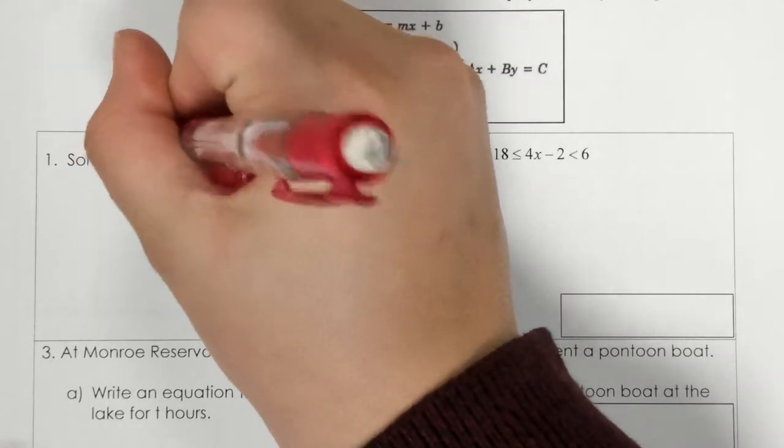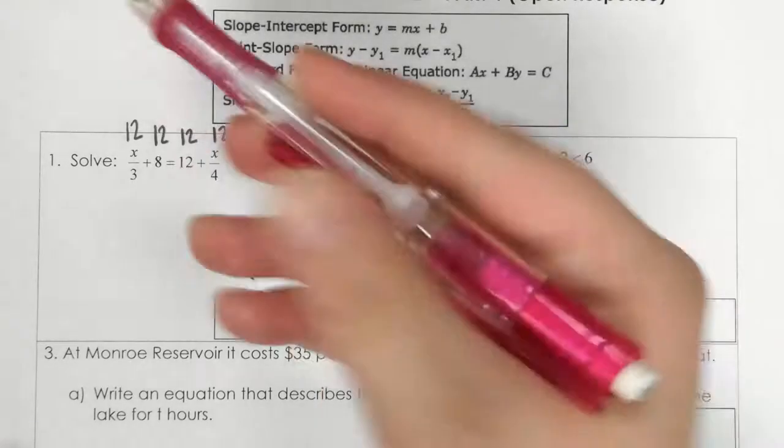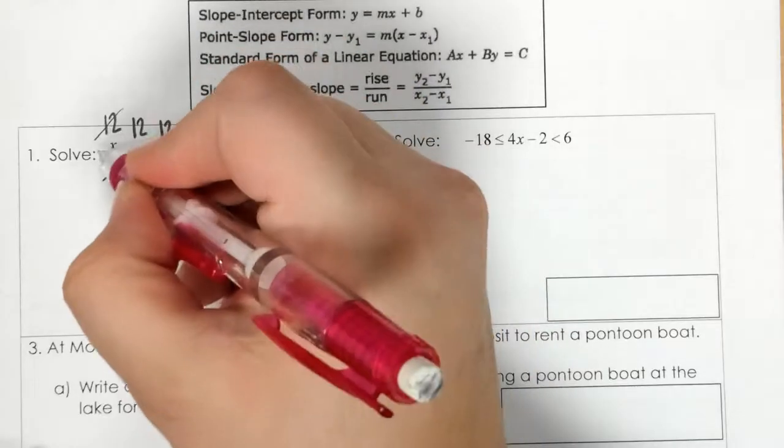So I have 12 above each one. Okay, the 12 and the 3, they cancel, we get 4x.